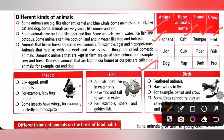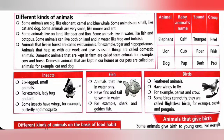Lion: the baby lion is called a cub, the sound of a lion is a roar, and the group of lions is called a pride. Dog: the baby dog is called a pup, the sound of a dog is a bark, and the group of dogs is called a pack.